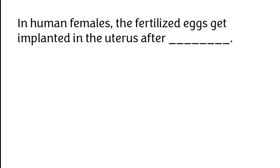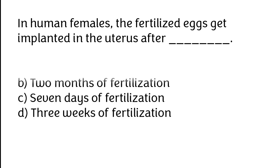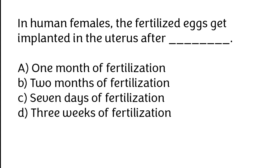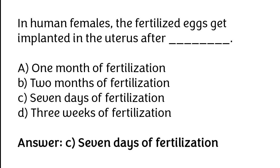In human females, the fertilized egg gets implanted in the uterus after: A) 1 month of fertilization, B) 2 months of fertilization, C) 7 days of fertilization, D) 3 weeks of fertilization. The correct answer is option C. In human females, the fertilized egg gets implanted in the uterus after 7 days of fertilization.